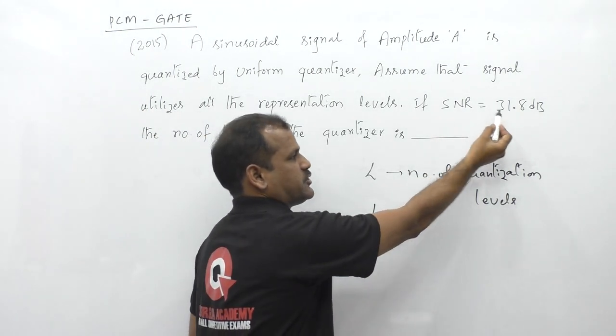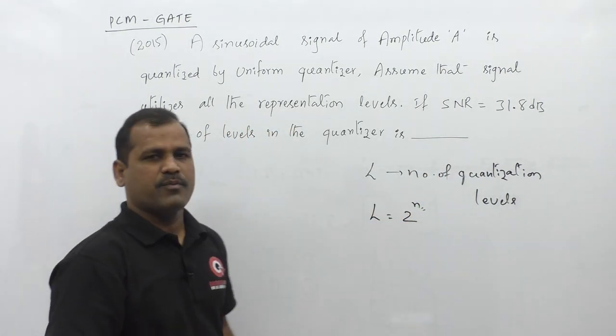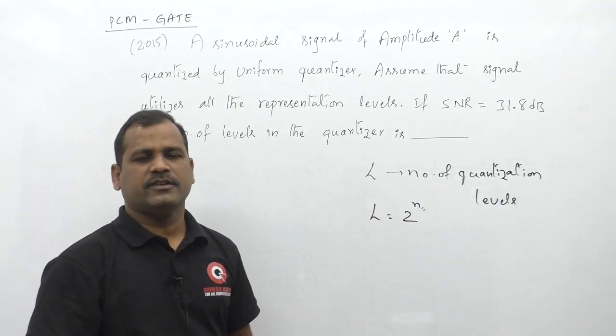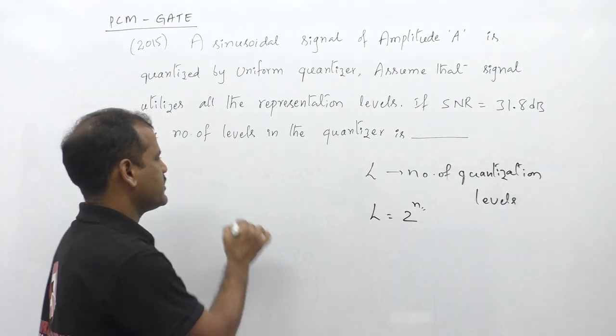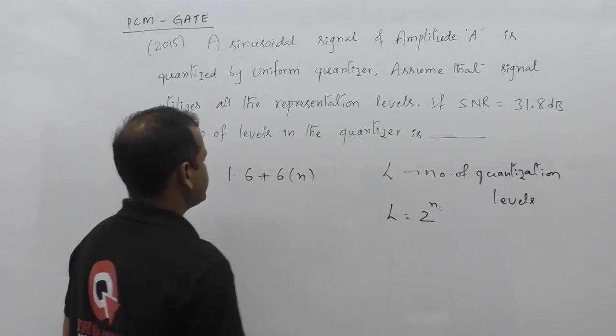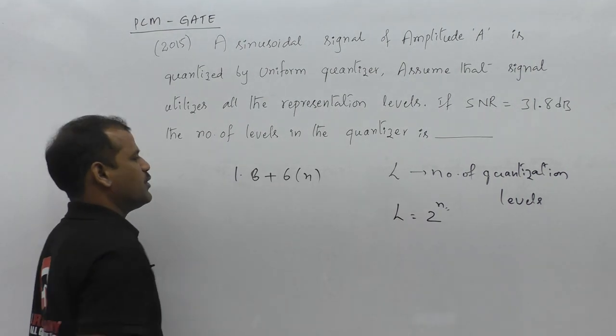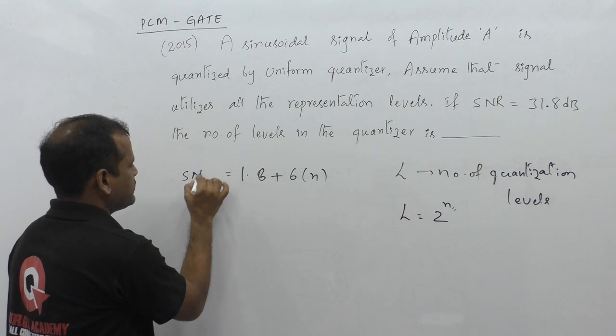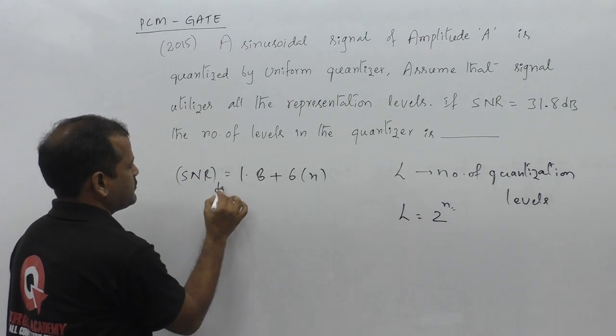The signal to noise ratio given in the question is 31.8 decibels. For a PCM system, the signal to noise ratio in decibels is given by the formula 1.8 plus 6 times N. This is the SNR of the PCM system in decibels.